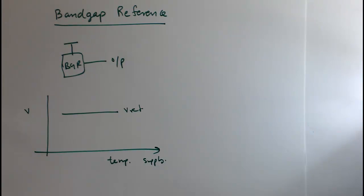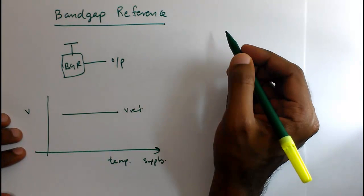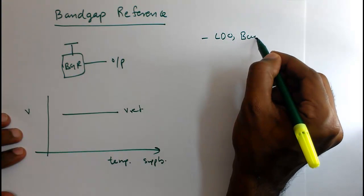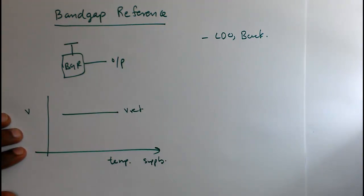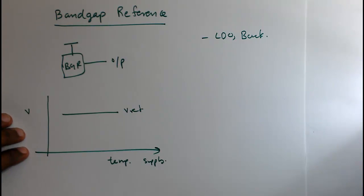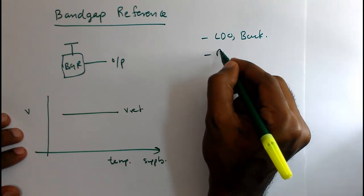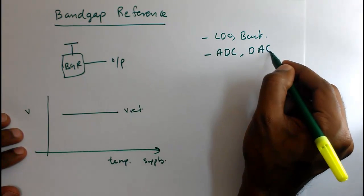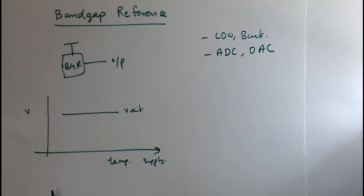There are other parameters like process variation also that we will discuss later. Band gap references are used in almost everywhere in analog circuit design. For example, if you are designing an LDO, a buck converter, a boost converter, or any regulator, a reference circuit is necessary to fix the output voltage. And in analog-to-digital converters — ADC and DAC — there also we use band gap reference.